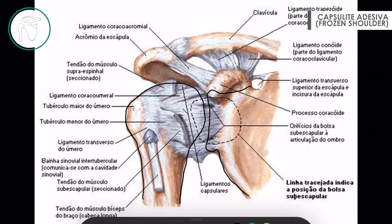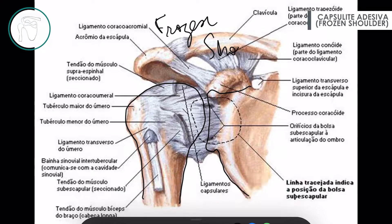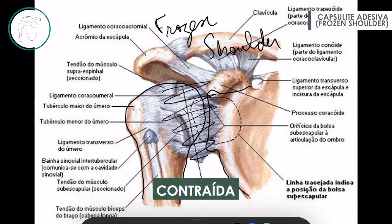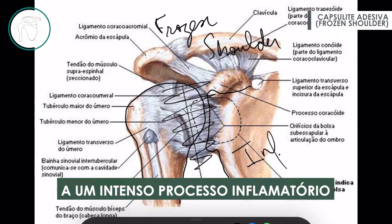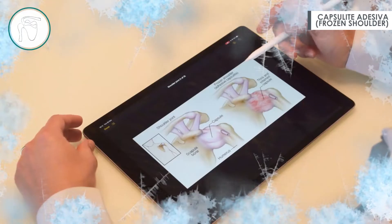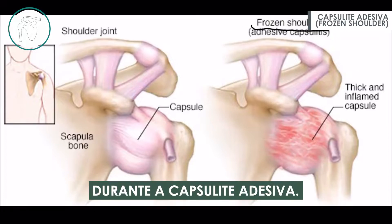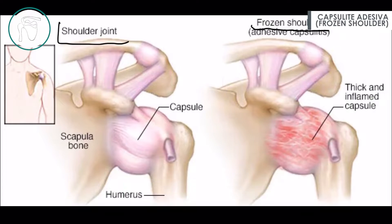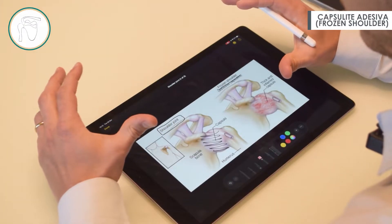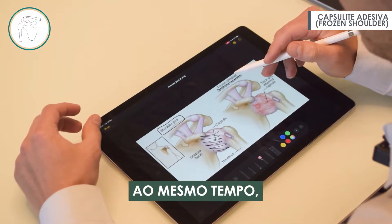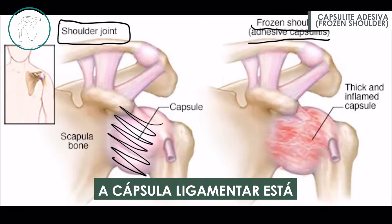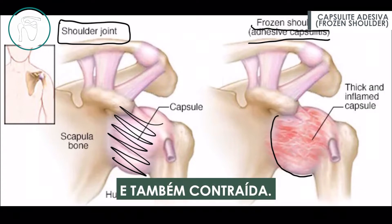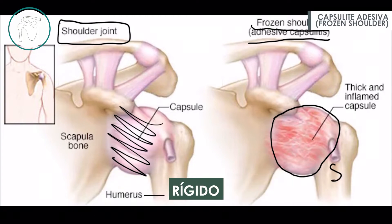In the context of frozen shoulder, what happens is that this ligamentary capsule is contracted and very stiff. This is an intense inflammatory process that causes pain and stiffness to the shoulder. A normal shoulder joint has the ligamentary capsule permitting movement while giving stability; during adhesive capsulitis, this capsule is intensely inflamed and very contracted, making the shoulder stiff and painful.